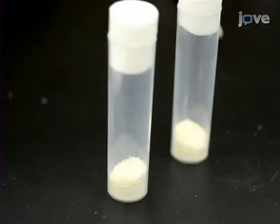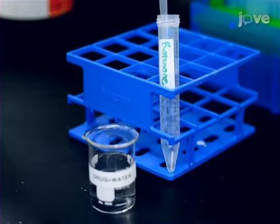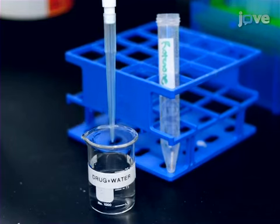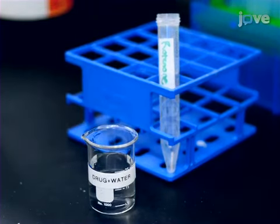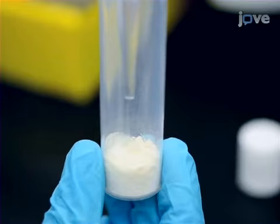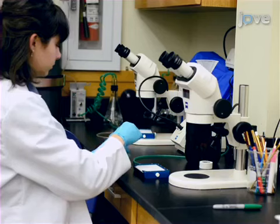To begin, add 1.5 grams of instant Drosophila medium in a standard fly vial. Constitute the medium with 5 milliliters of deionized water containing the appropriate rotenone dose.